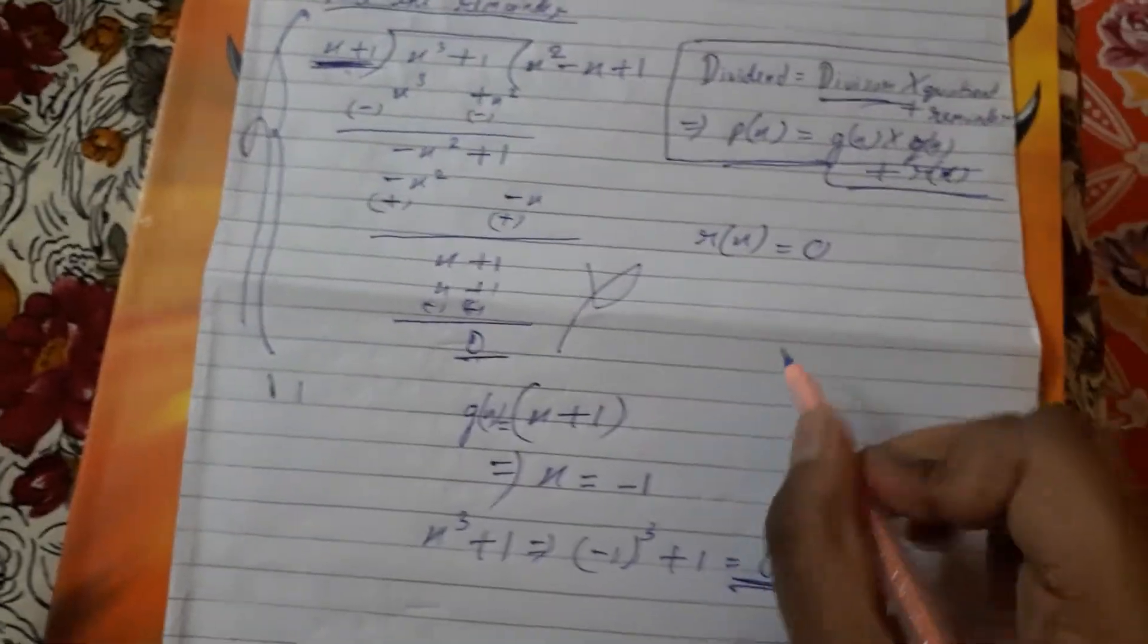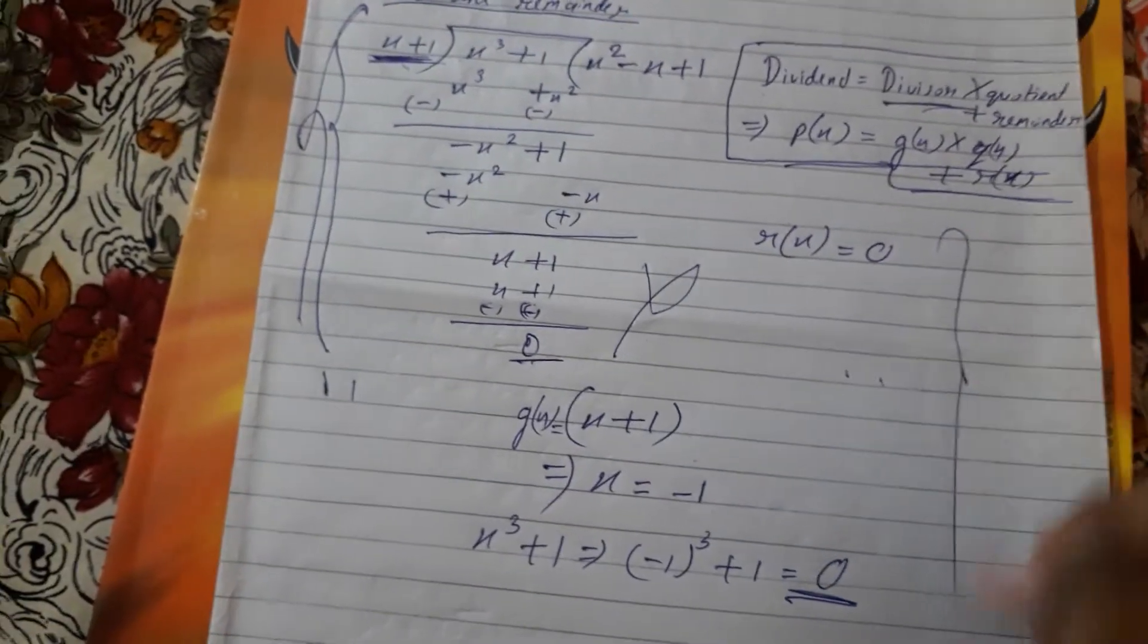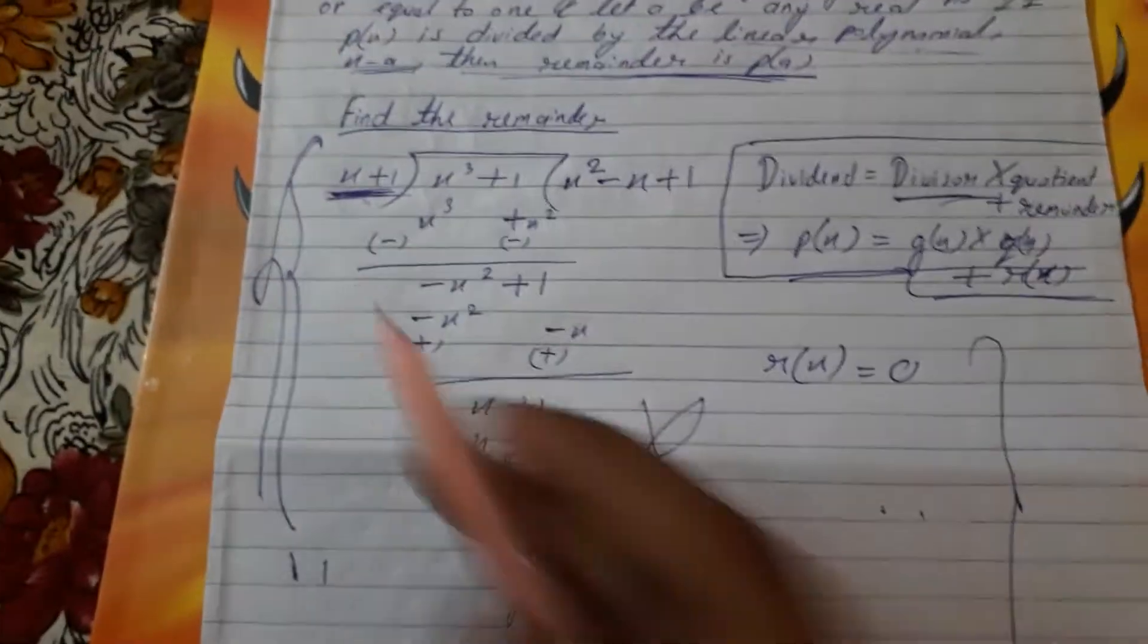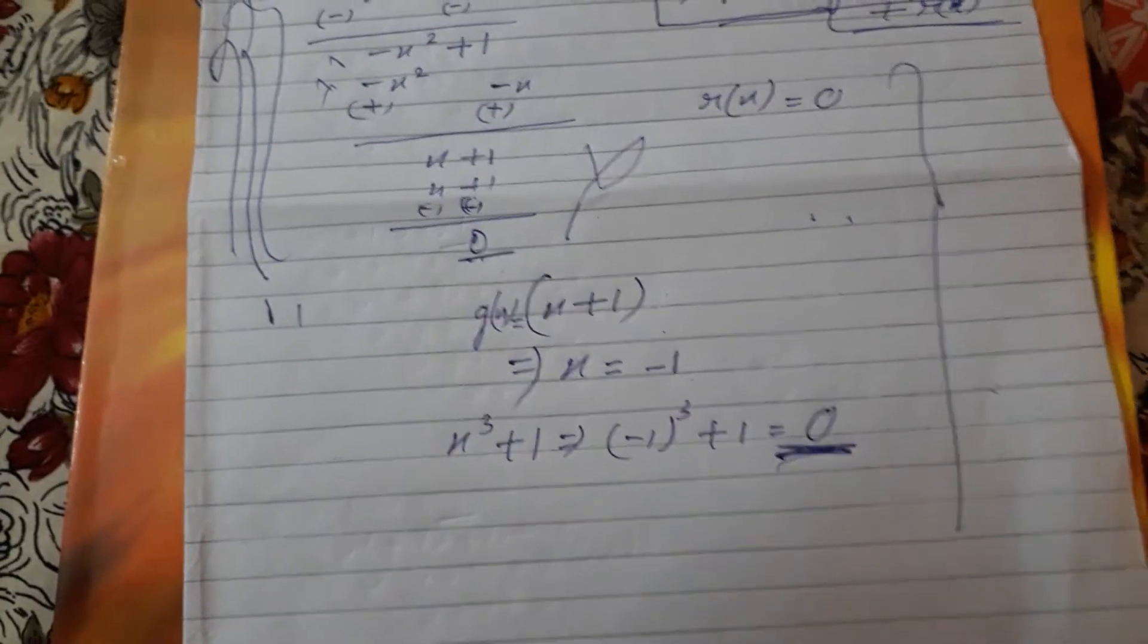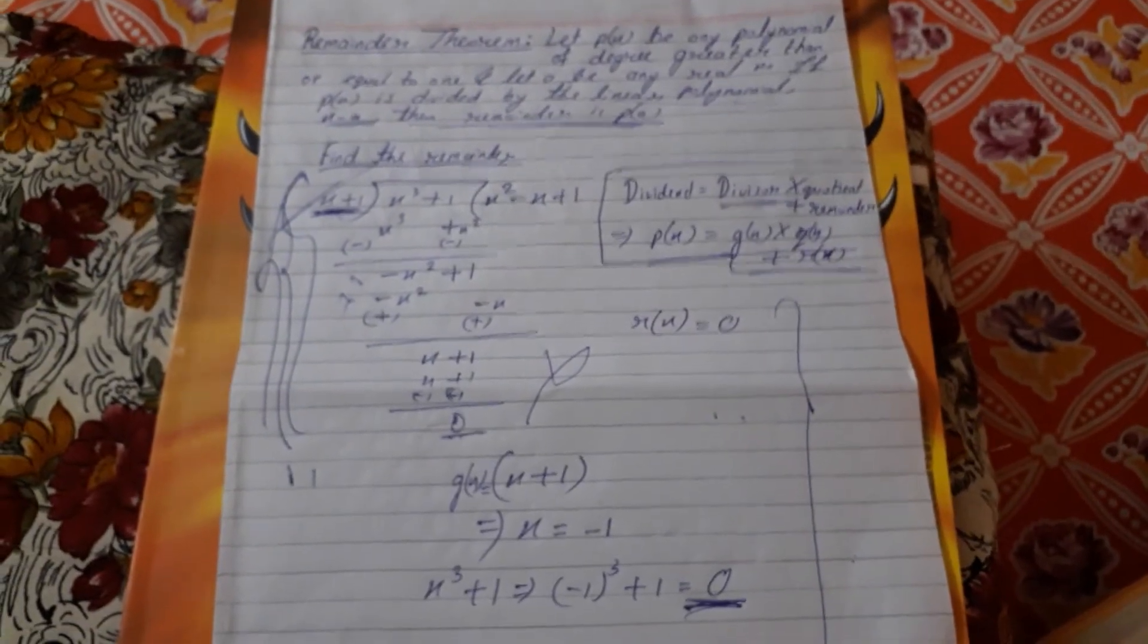Now see, this is what the Remainder Theorem is saying. You need not do this long division method. You can easily find this in one second with one or two steps. This is all about the Remainder Theorem.